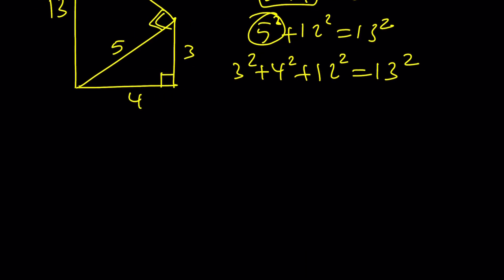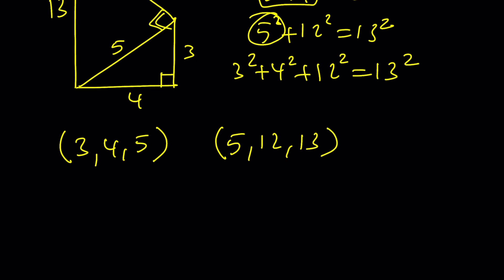The triple 3, 4, 5 is special because they are consecutive integers and this is the only one that's so unique. And 5, 12, 13 is another one — you should know this because it comes up a lot. Obviously you can get 6, 8, 10 from scaling, but 3-4-5 and 5-12-13 are the primitive Pythagorean triples, meaning all these numbers are relatively prime.